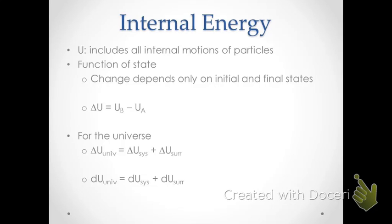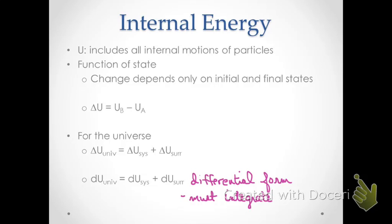We've been using delta U for change here. It's important to note that when we deal with processes where there is a continuum of changes, we need to use a more exact differential form. The differential form means that each change, for example dU_universe, corresponds to an infinitesimal change in internal energy. To get our final answer for a finite process, we're going to have to do some integration.